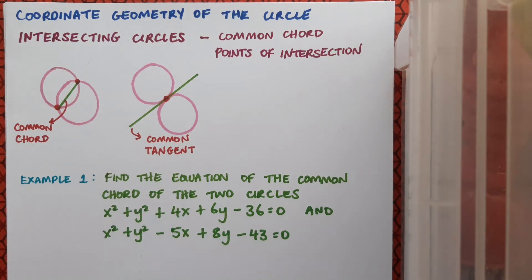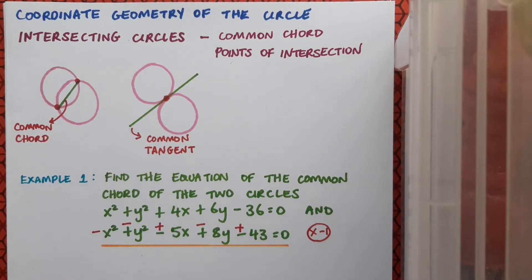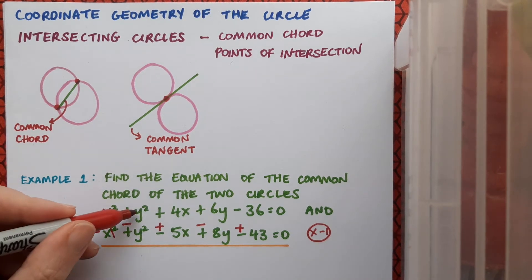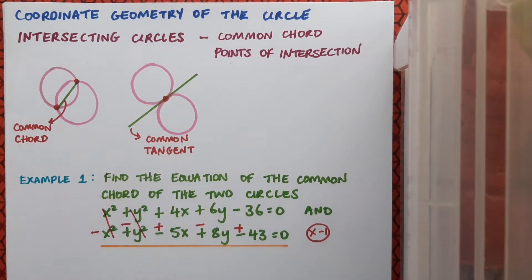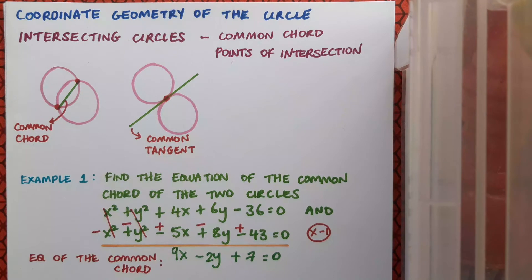To do this, all I have to do is multiply one of the equations by -1. I'm going to choose the second equation, which has the effect of changing all the signs. Now I'll merge the two equations: x² - x² cancels out, y² - y² cancels out, and the remaining terms combine to give 9x - 2y + 7 = 0. And that's the equation of the common chord for these two circles.